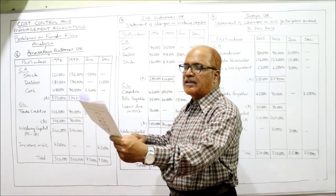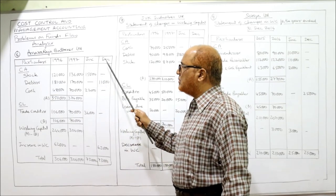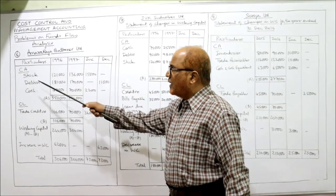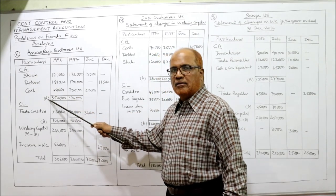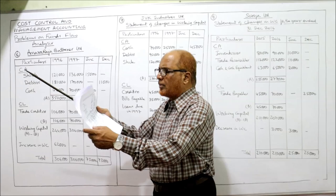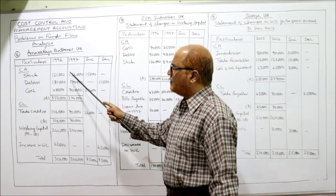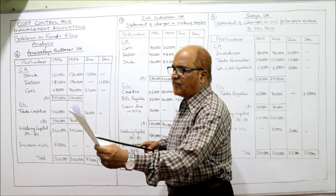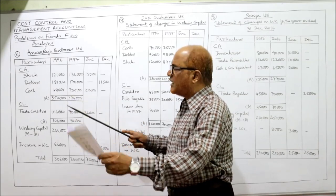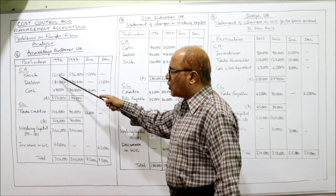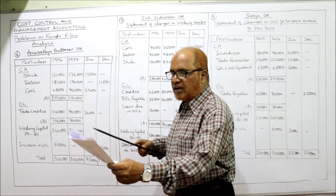In the statement of changes in working capital for Amara Raja Batteries, last year is 1996 and current year is 1997. Current assets: stock is 1,21,000 last year and 1,36,000 current year; debtors are 1,81,000 and 1,70,000; cash is 48,000 and 70,000. Total current assets: 3,50,000 last year and 3,76,000 current year.